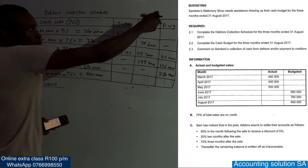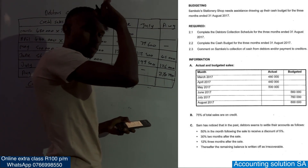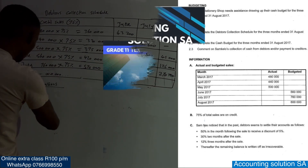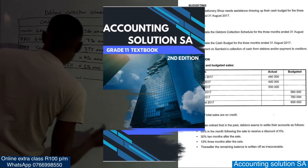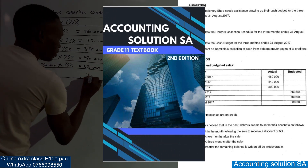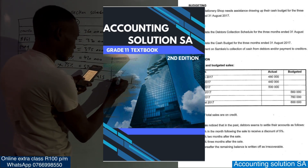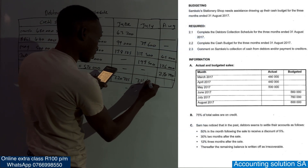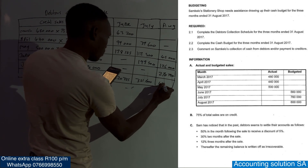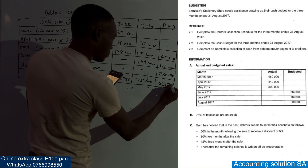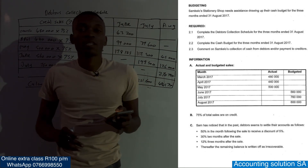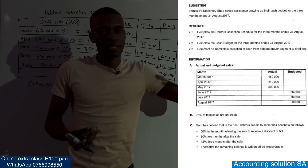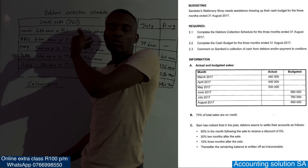Now, since August is the last required month and collection happens in the following month of September — which is not in our schedule — we can remove that column and replace it with totals. The column totals are: 320,325 then 351,600 and then 411,750. Basically we were doing revision of what we already studied, so if you haven't watched Part 1 and Part 2 please go watch them first so you know how we calculate this.